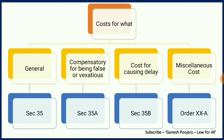As I said, there are three important sections and one important order that we need to cover — cost for what? The first section is Section 35, which discusses general provisions. Then we have Section 35A, which is all about compensatory costs for false or vexatious claims. Then we have Section 35B, which discusses costs for causing delay. And then we have Order 20A, which is all about miscellaneous costs. Basically, there are three types of cost: compensatory for being false or vexatious, cost for causing delay, and miscellaneous costs.